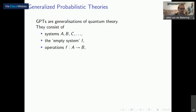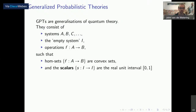GPTs can be described as a collection of systems, which represent physical systems. We have a special system I, the empty or trivial system. Then we have some set of operations between systems. The home sets — the collection of operations between two given systems — are convex sets, which you can see as the classical probabilistic action between these two functions. The scalars, maps from the trivial system to the trivial system, are the real unit interval from 0 to 1, representing probabilities of events.